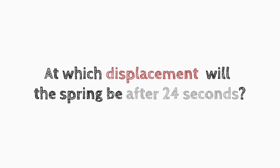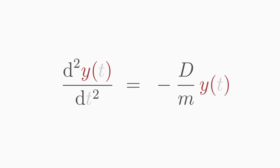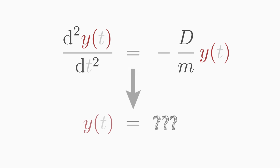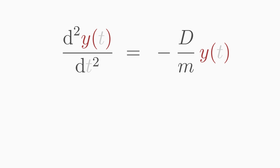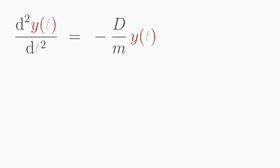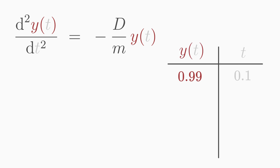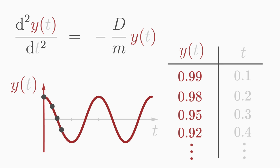To answer our previous question — at which displacement y will the spring be after 24 seconds — we must solve the differential equation. Solving a differential equation means finding out how the function y you are looking for exactly depends on the variable t. For some differential equations there is not even an analytic solution, meaning you cannot write down a concrete equation for the function y. The only possibility then is to solve the differential equation on the computer numerically, producing data points to represent in a diagram.